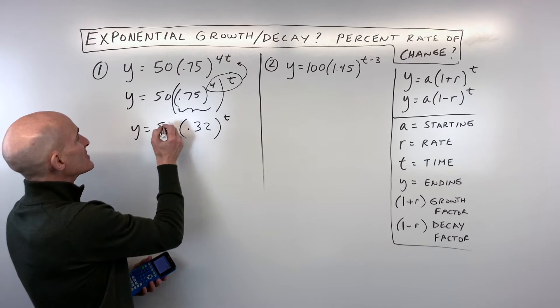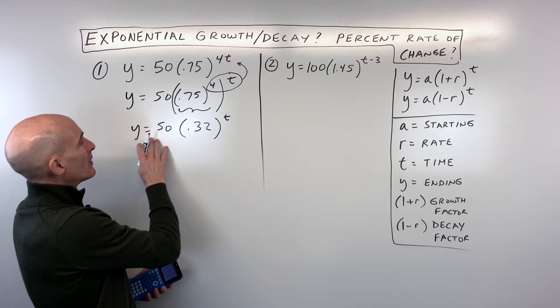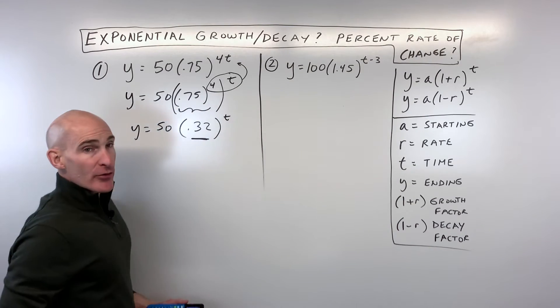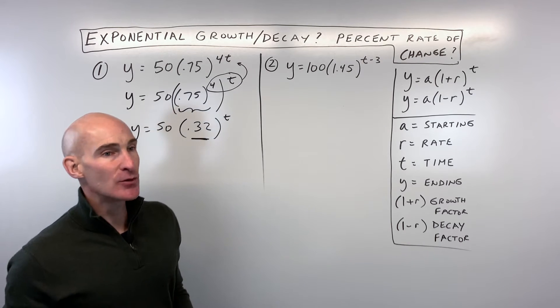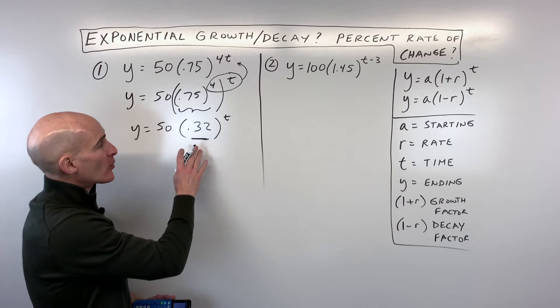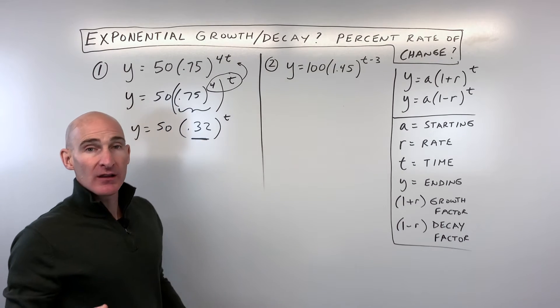And then now what you can see is we have, in our exponential form here, you can see this base is 0.32. Now 0.32 is less than 1, which we know this is going to be an exponential decay function. The question is, how much less than 1 is it?